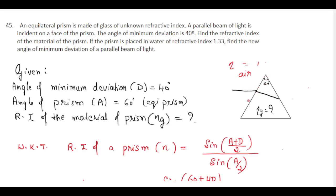Given: we have an equilateral prism made up of glass, and when a parallel beam of light is incident on this prism, the angle of minimum deviation is 40 degrees. So angle of minimum deviation D equals 40 degrees, and since this is an equilateral prism, the angle A is 60 degrees.